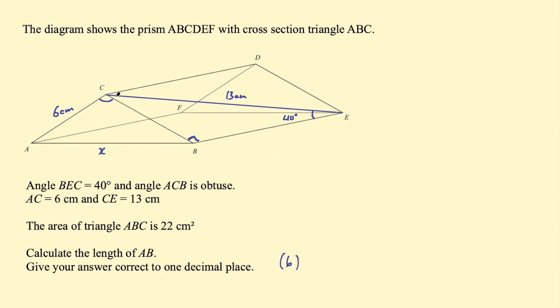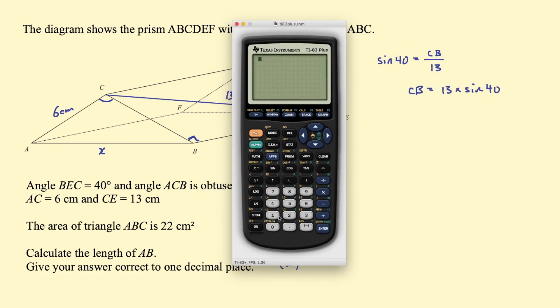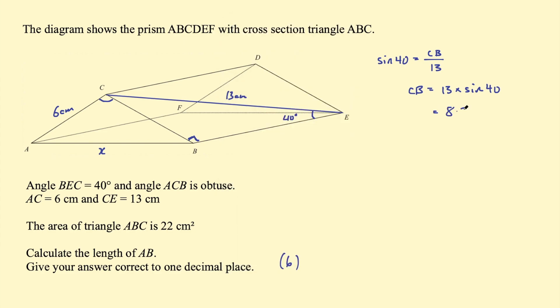Well, if we've got this angle, we're looking for the opposite side and we have the hypotenuse, we can use the sine ratio. So the sine of 40 degrees would equal the opposite side, which is CB, divided by the hypotenuse, which is 13. So then CB equals 13 times the sine of 40. Let's go ahead and calculate that. So 13 times the sine of 40, I get 8.356 and so on.